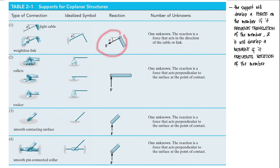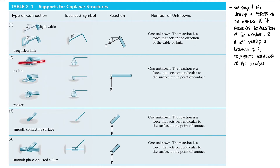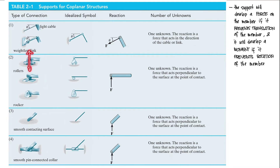Next, let's see what idealized symbols we are going to use for our analytical models. It is important to know that the supports will develop a force on the member if it prevents translation of the member, and it will develop a moment if it prevents rotation of the member. Our first type of connection would be our weightless link. For our weightless link, the reaction force acts along the direction of the cable or the link. Nothing prevents this one from moving or rotating except along the direction of your weightless link. Thus, our reaction acts along that link, so we only have one unknown since we only have one reaction. Next, we have our rollers and rockers — the movement that is being prevented is vertical translation. Our structural elements are free to move horizontally and can also rotate. Thus, the only reaction is acting perpendicular to the surface of the point of contact, so we have one unknown.